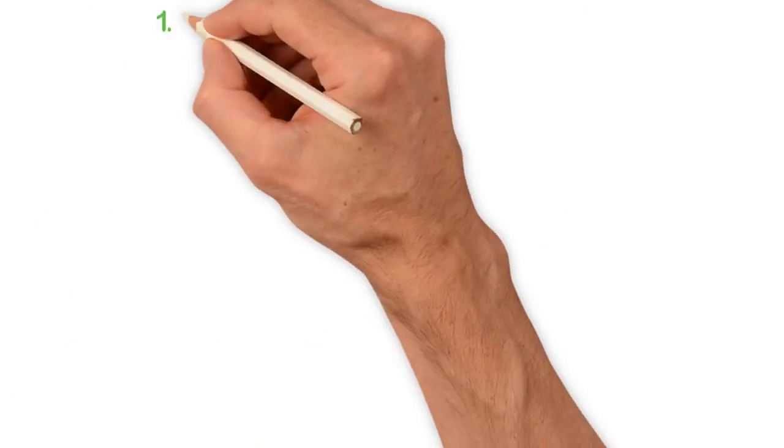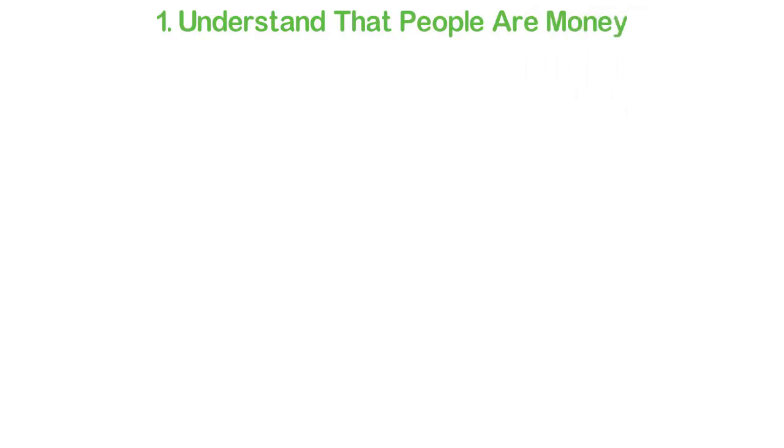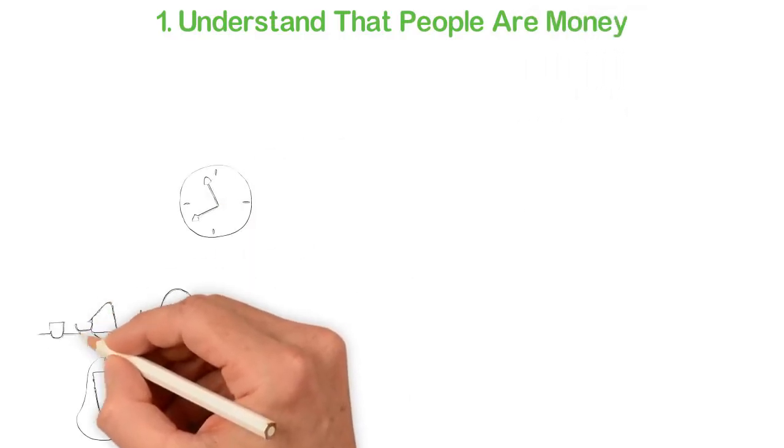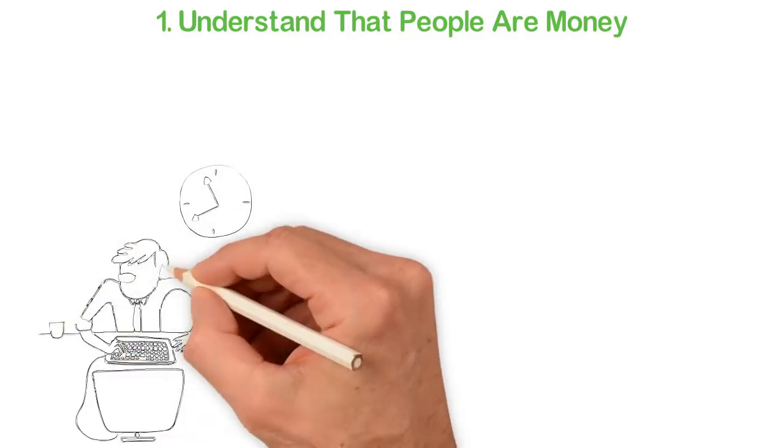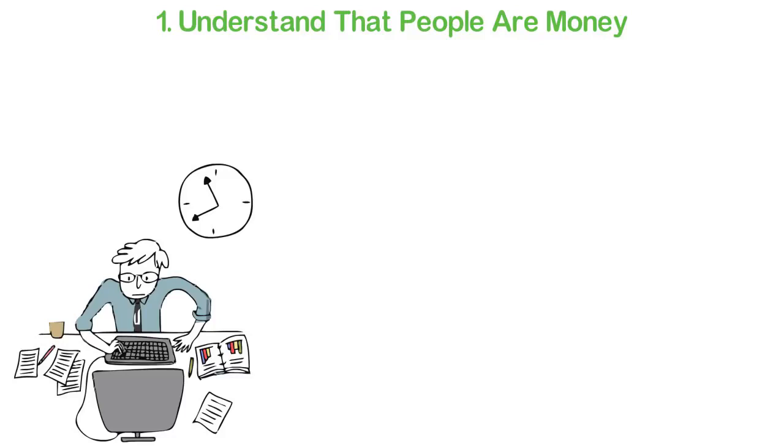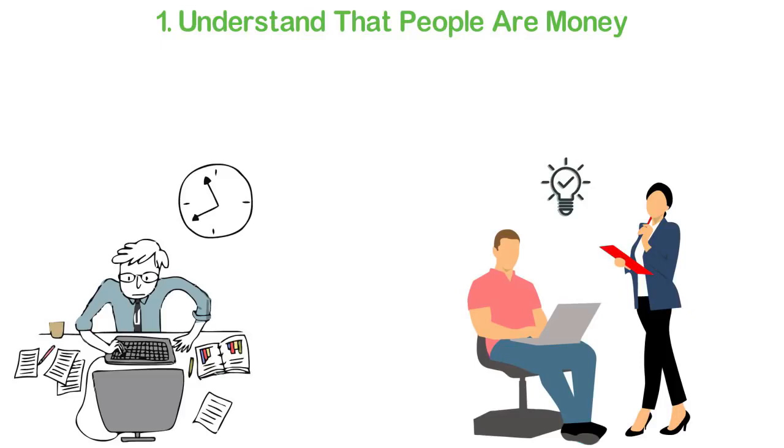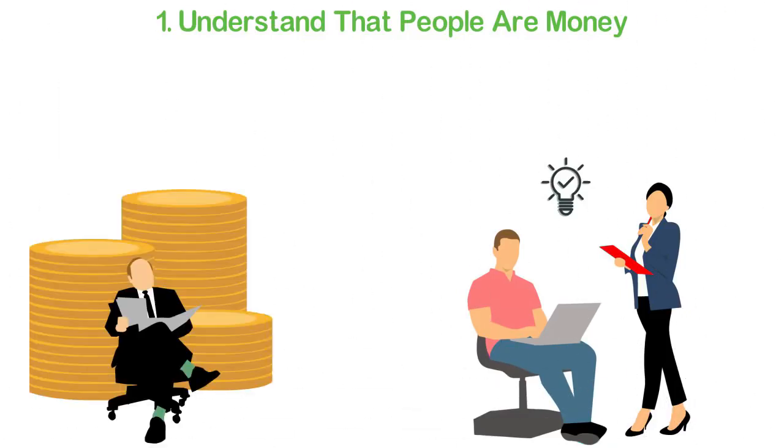Let me leave you with a few tips. Number 1: Understand that people are money. This is the most important point in this video, because if you understand that people are money, knowing that there's a room where a billion people live will make you restless. You should not sleep until you figure out how to serve a percentage of the billions of people in this room through the internet.